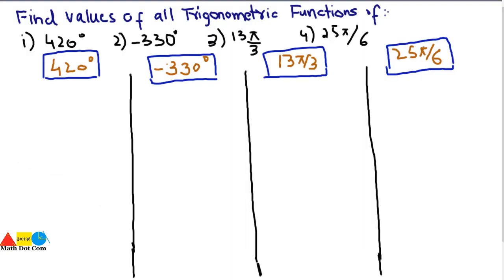Today we are going to learn how you can find the values of trigonometric functions — sine, cos, tan, cosecant, cot, and secant — of angles such as 420°, -330°, 13π/3, and 25π/6. Note that these are angles other than those we have already discussed, the values of which we can easily find through a table if we remember values from 0° to 90°.